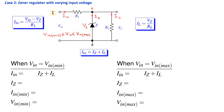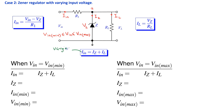Consider Case 2: the Zener regulator with varying input voltage. The Zener regulator provides a constant output voltage VZ across load RL for a range of input voltage values. Since IIN = (VIN − VZ) / R1 depends on VIN, IIN is varying. Since IL = VZ / RL is independent of VIN, IL is fixed. Therefore IZ is also varying to maintain Kirchhoff's current law.